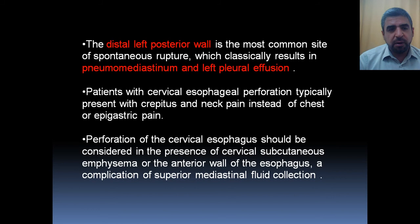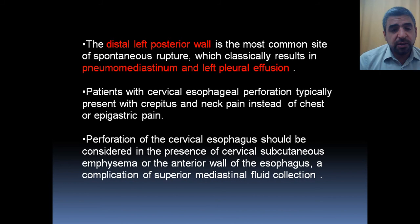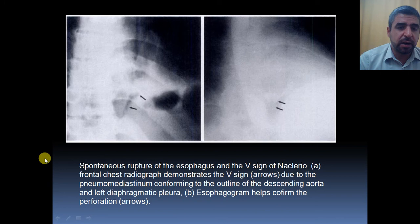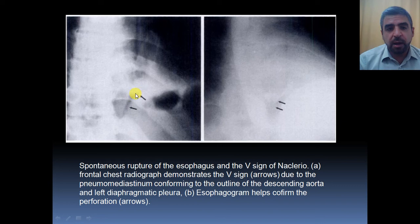The distal left posterior wall is the most common site of spontaneous rupture, which classically results in pneumomediastinum and left pleural effusion. Patients with cervical esophageal perforation typically present with crepitus and neck pain instead of chest or epigastric pain. Perforation of the cervical esophagus should be considered in the presence of cervical subcutaneous emphysema. You can see here what we call the V-sign of Naclerio — it appears as the letter V between the descending thoracic aorta, the mediastinal pleura, and the left diaphragmatic pleura. This is a very early sign of esophageal perforation.